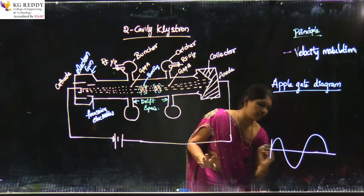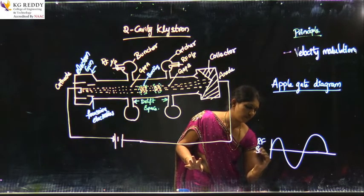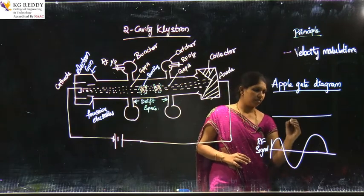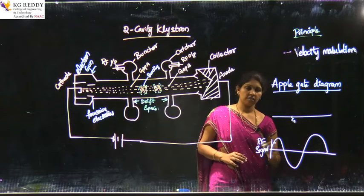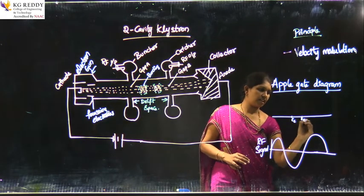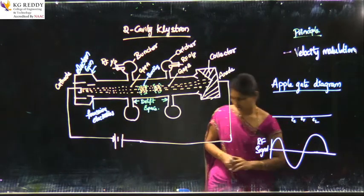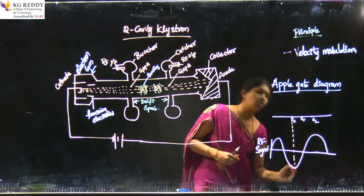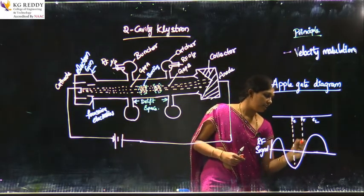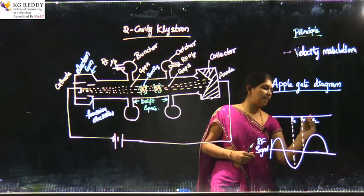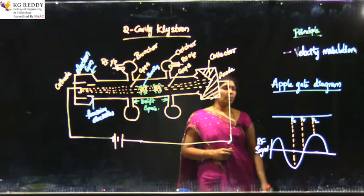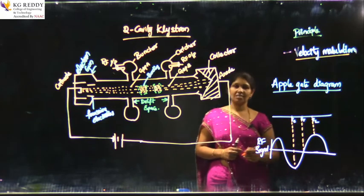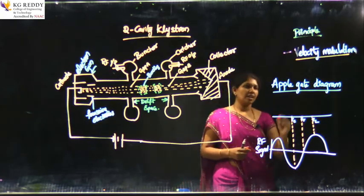The Applegate diagram explains the velocity modulation taking place in the electrons. This is the RF signal. We can take three electrons as an example: the early electron, the reference electron, and the late electron.